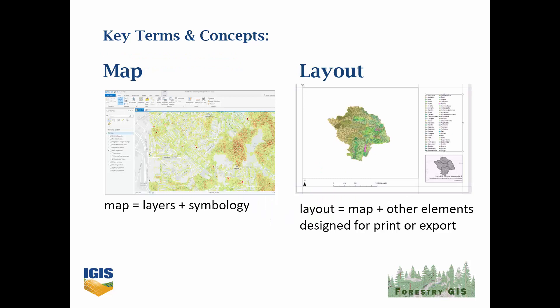Maps and layouts are terms from ArcGIS Pro, but the idea is generic. A map is simply a set of layers with their symbology. A layout includes one or more maps along with all the other stuff you typically want to have — such as a legend, scale bar, north arrow, and so on. In the software, maps and layouts are designed in different windows with different sets of tools available.